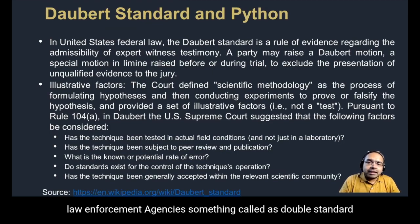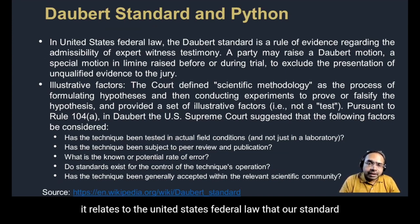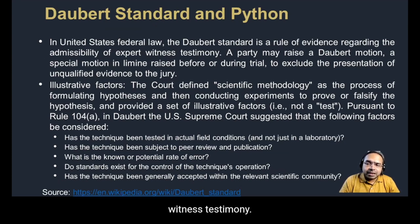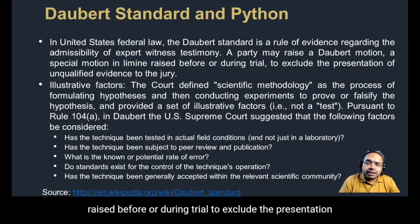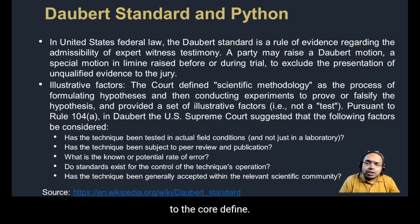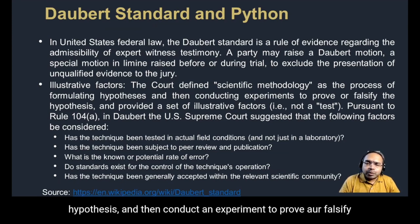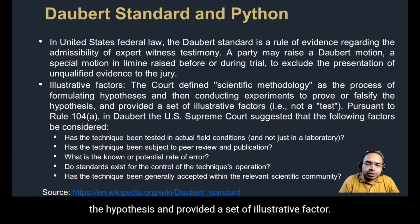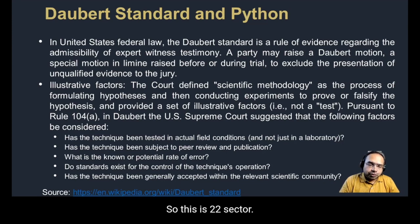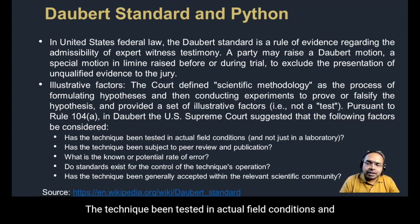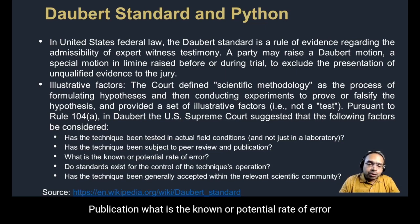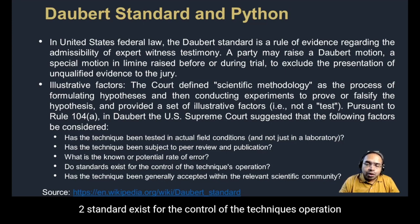There is something called the Daubert Standard, which is closely related to Python. In United States federal law, the Daubert Standard is the rule of evidence regarding the admissibility of expert witness testimony. A party may raise a Daubert motion — a special motion in limine raised before or during trial — to exclude the presentation of unqualified evidence to the jury. The court defines scientific methodology as the process of formulating a hypothesis and then conducting experiments to prove or falsify it. Illustrative factors include: has the technique been tested in actual field conditions, has it been subject to peer review and publication, what is the known or potential rate of error.